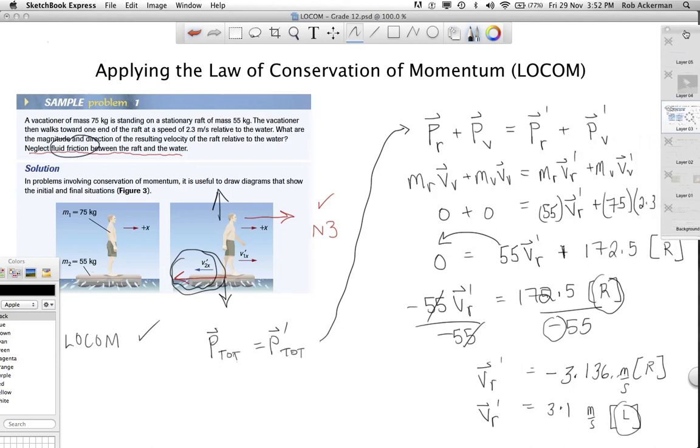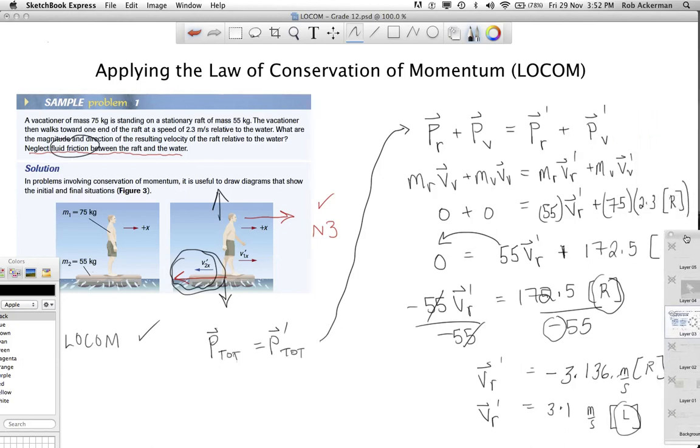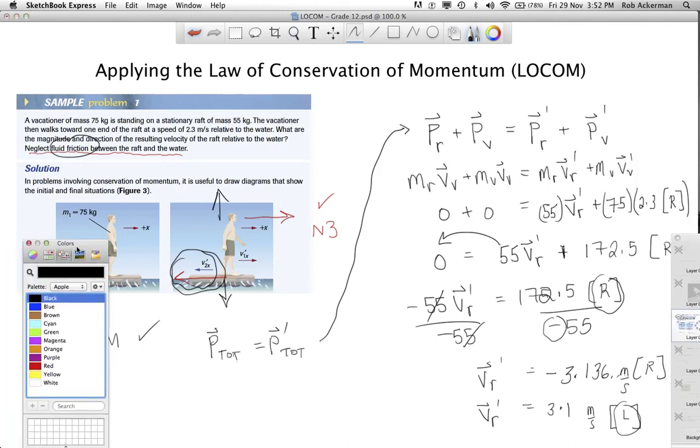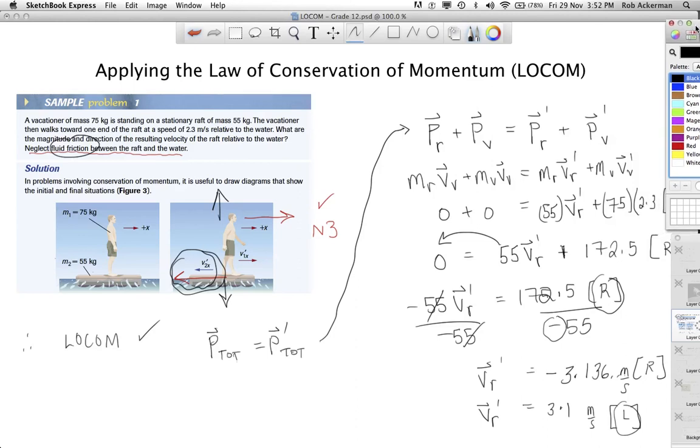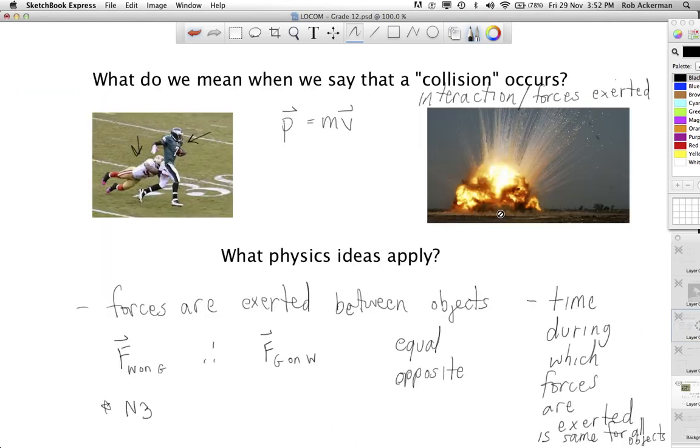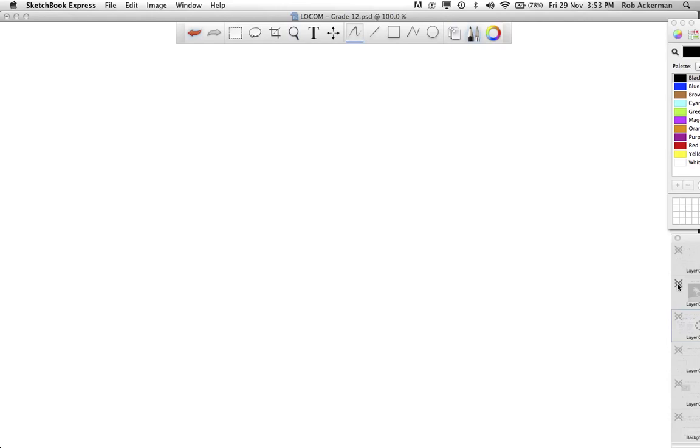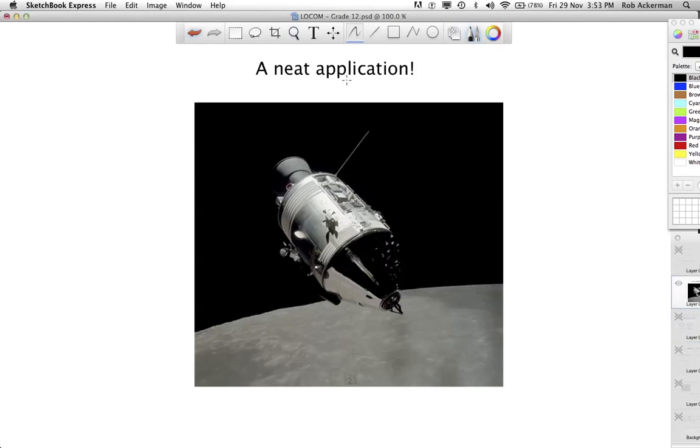All right. Now, there are lots of other examples of interactions like this. In some cases, they involve collisions in the traditional sense, like maybe two cars colliding. But in some cases, they involve the word collision, really meaning like an interaction. These guys are interacting here. You'll see some questions where an explosion is described, and that also is an interaction in the English sense of the word. Anyway, I'd like to leave you with one last thought, a really neat application of the law of conservation of momentum.